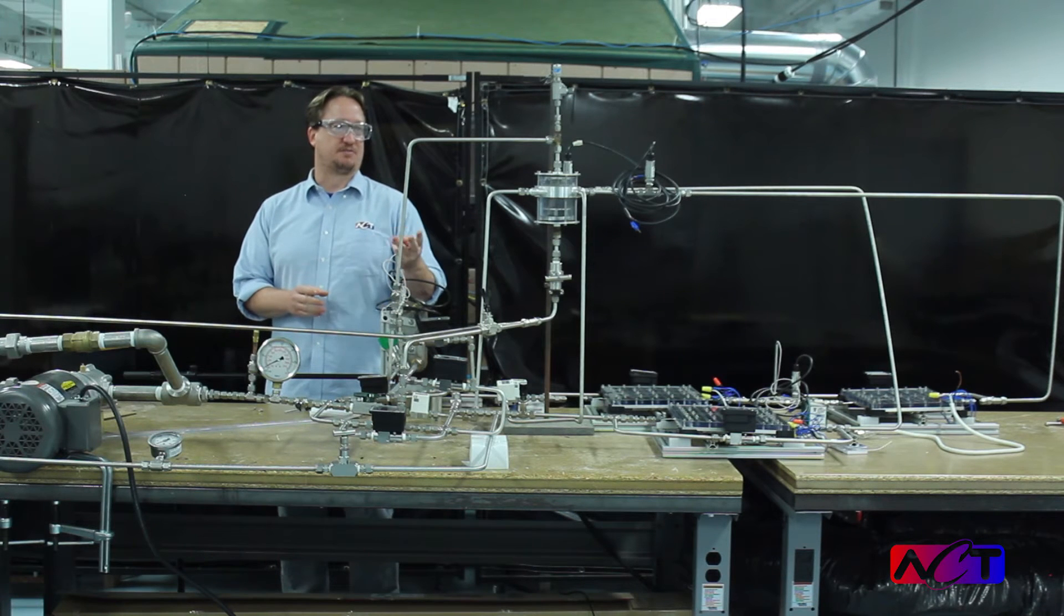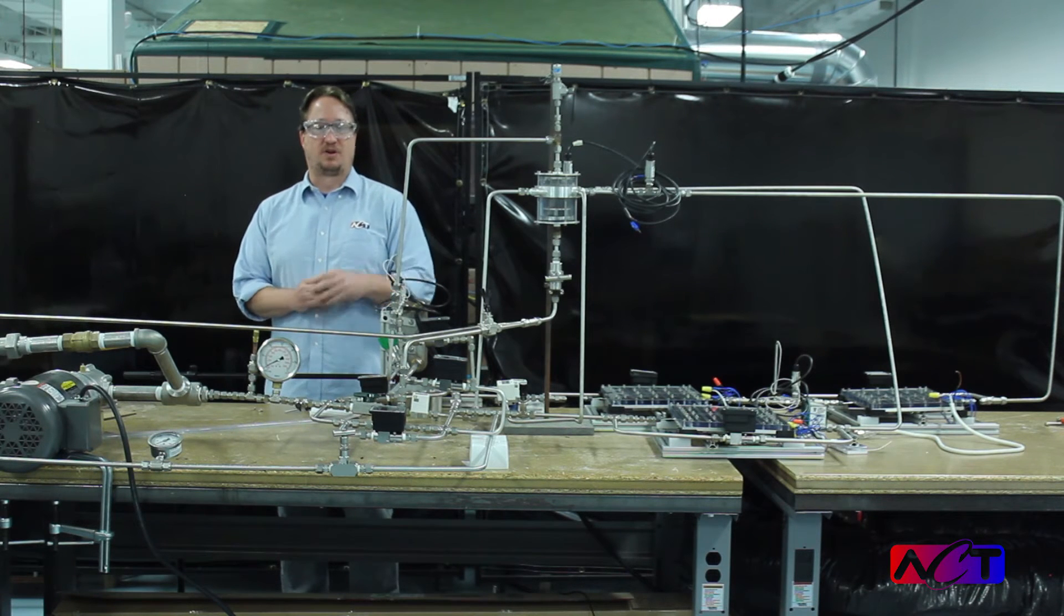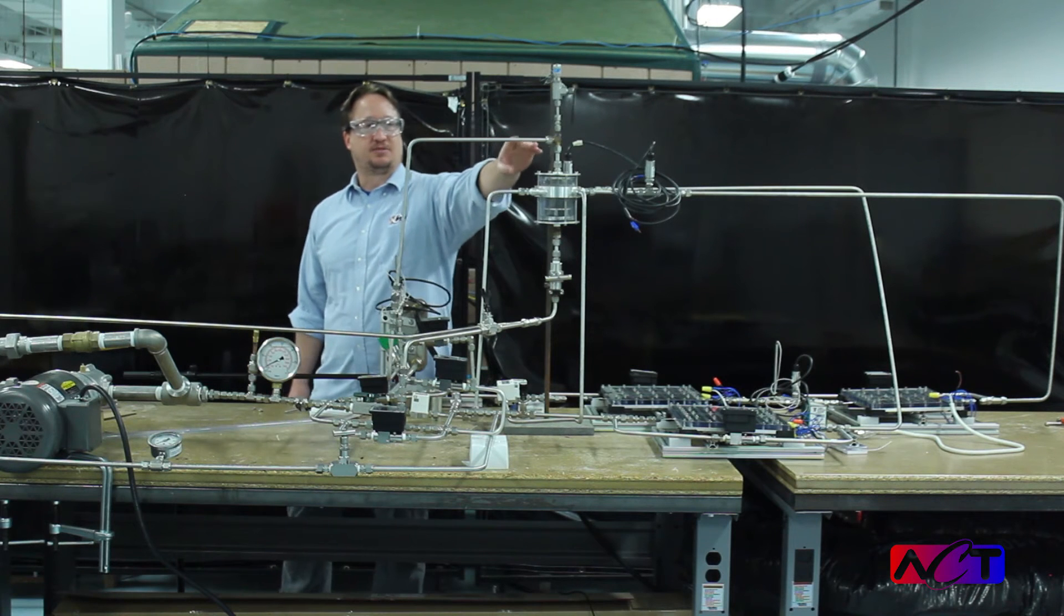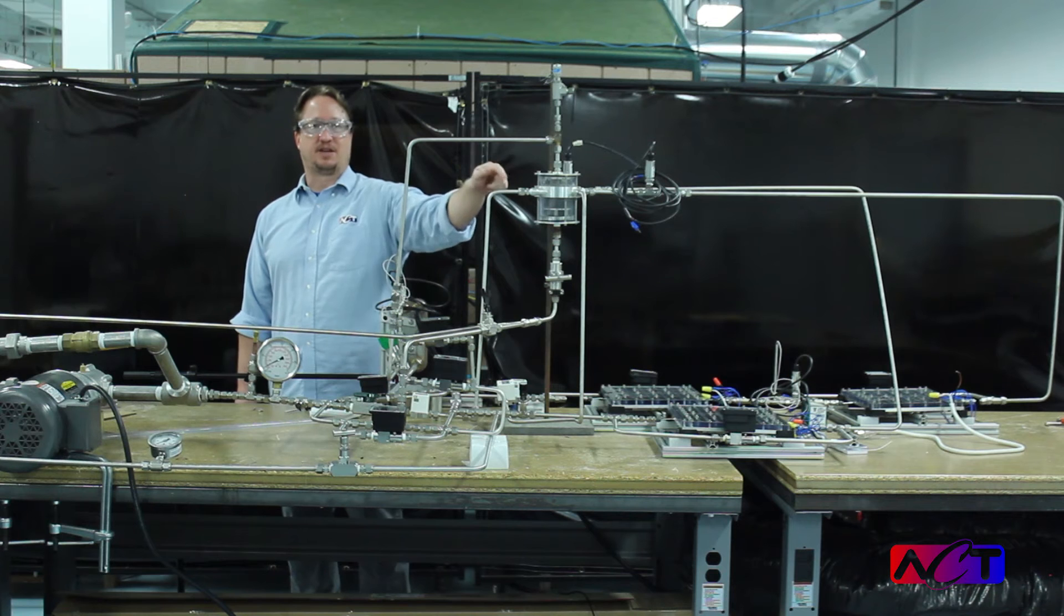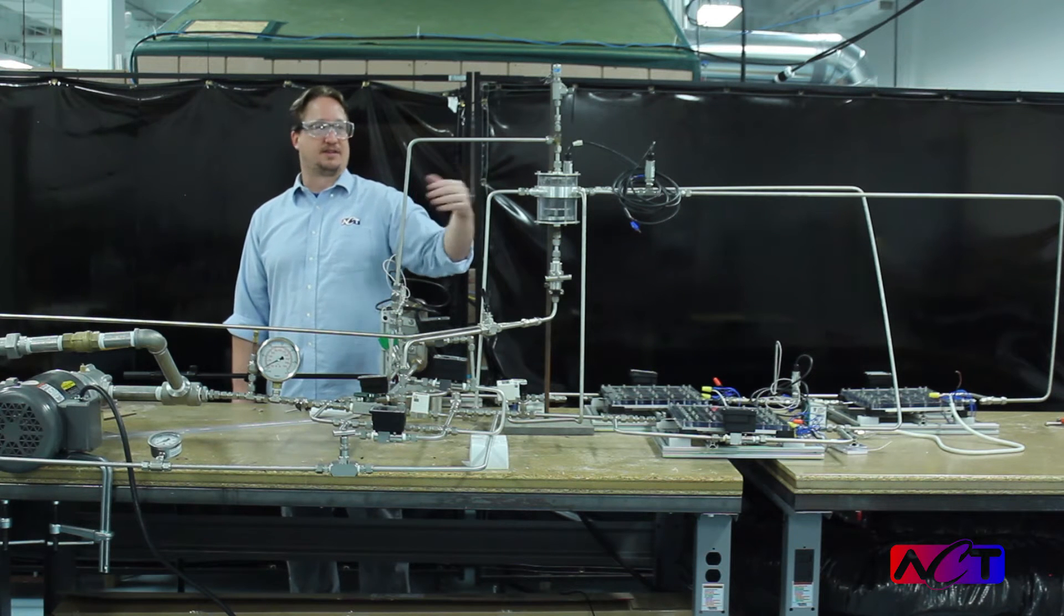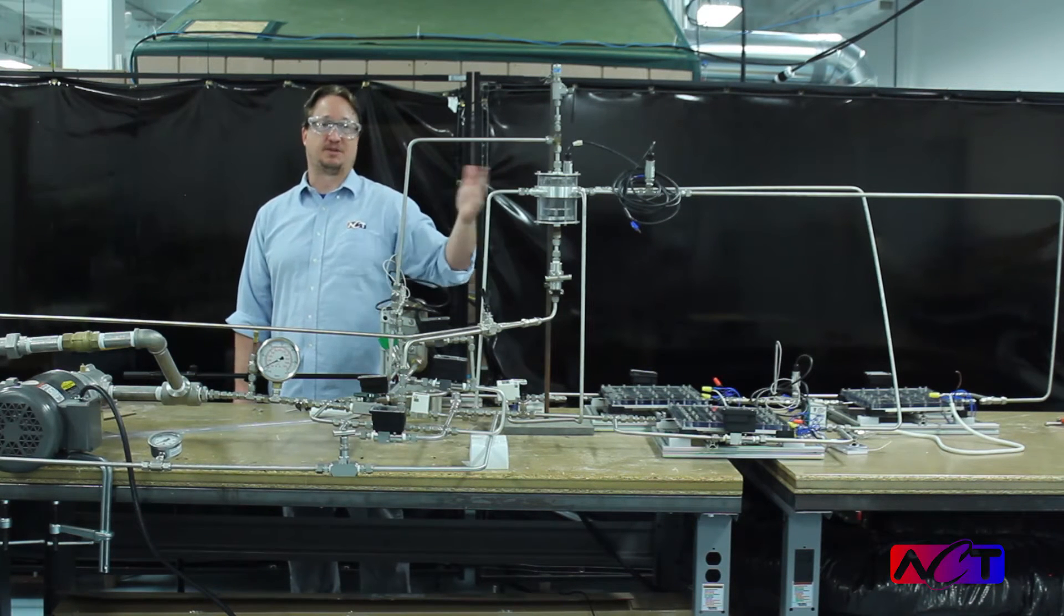There's three major components to this system. One of them is the phase separator. The phase separator that we use is a cyclone style separator and its job is to separate vapor and liquid that return from the evaporators or even maybe from the condenser, so that way the evaporators don't have to completely evaporate all the working fluid.